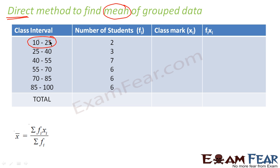So if you see, 10 plus 25 by 2 is how much? 35 by 2, and that is nothing but 17.5. So my xi becomes 17.5. We'll find all the middle values.